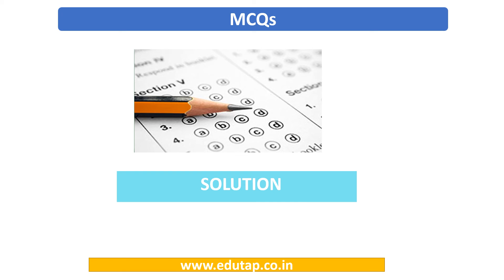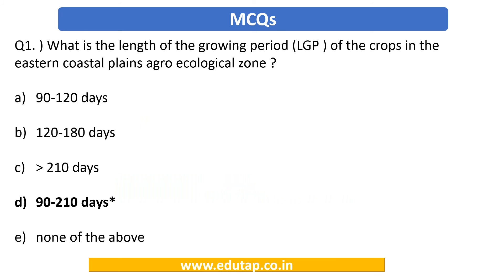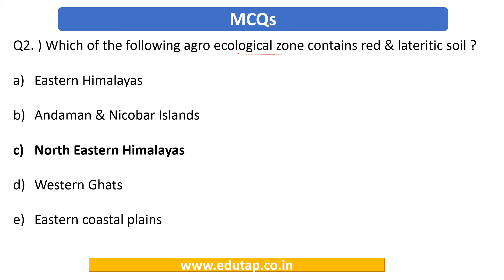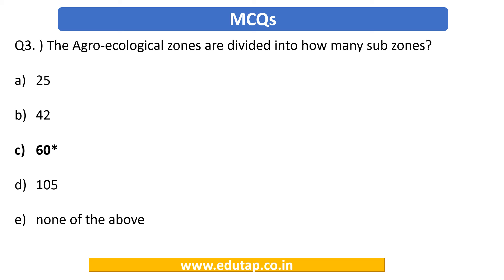Now for the MCQ solutions. The first question asked about the LGP for the eastern coastal plains — the answer is 90 to 210 days. The second question asked which agroecological zone contains red and lateritic soil — the answer is the North-Eastern Himalayas, also called the Purwanchal Himalayas. The third question asked into how many sub-zones agroecological zones are divided — the answer is 60 sub-zones.